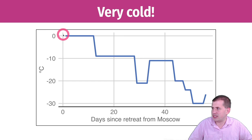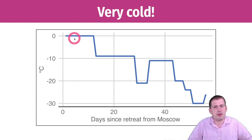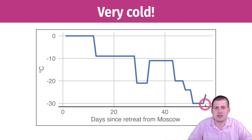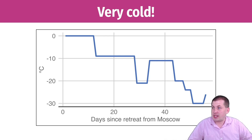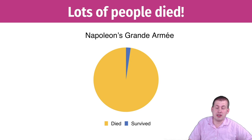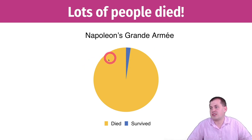The day they left Moscow was zero degrees Celsius — 32 degrees Fahrenheit — which is pretty cold. As they kept retreating it got colder and colder until it was negative 30 degrees Celsius, which is almost negative 30 Fahrenheit. That's pretty cold for trying to retreat from a war. We can also look at the number of deaths during the invasion and retreat. A simple pie chart shows that the vast majority of Napoleon's grand army died — only a tiny sliver survived.